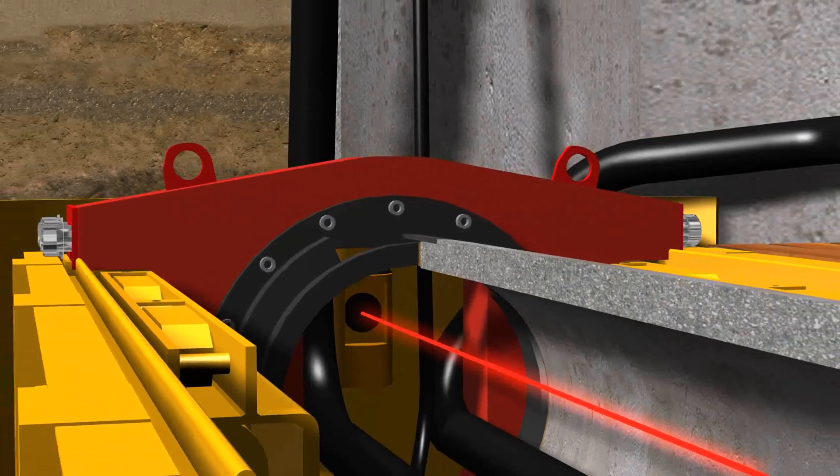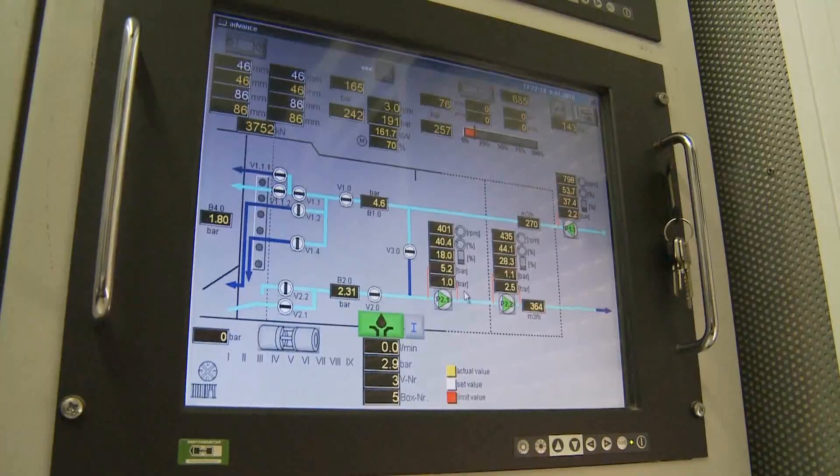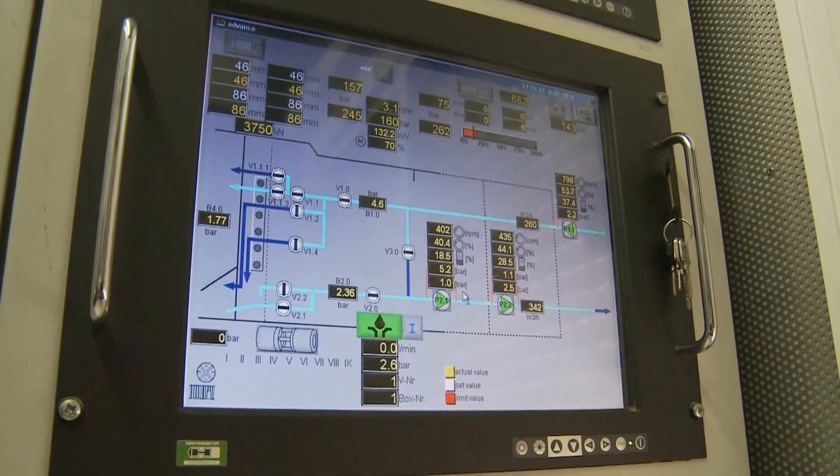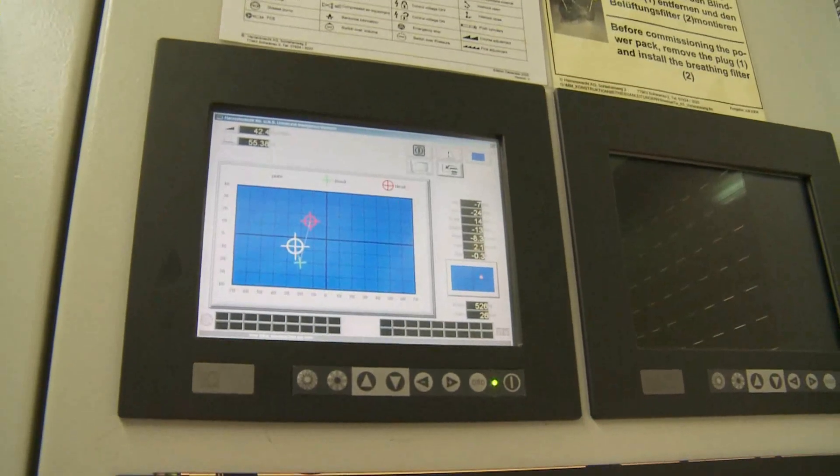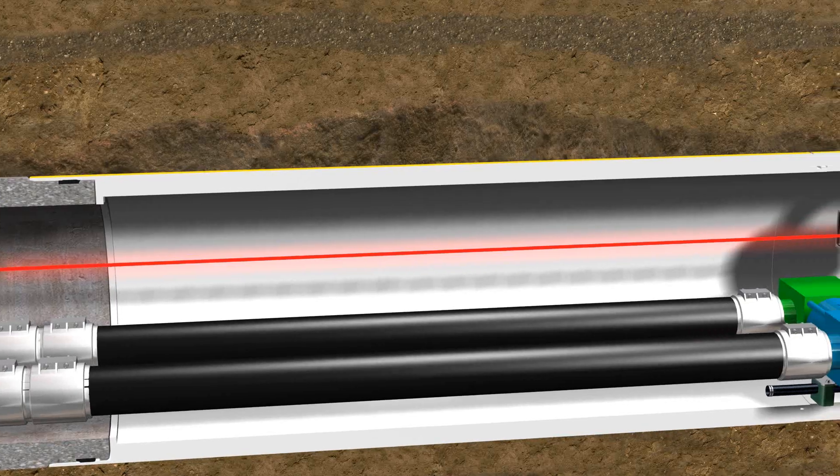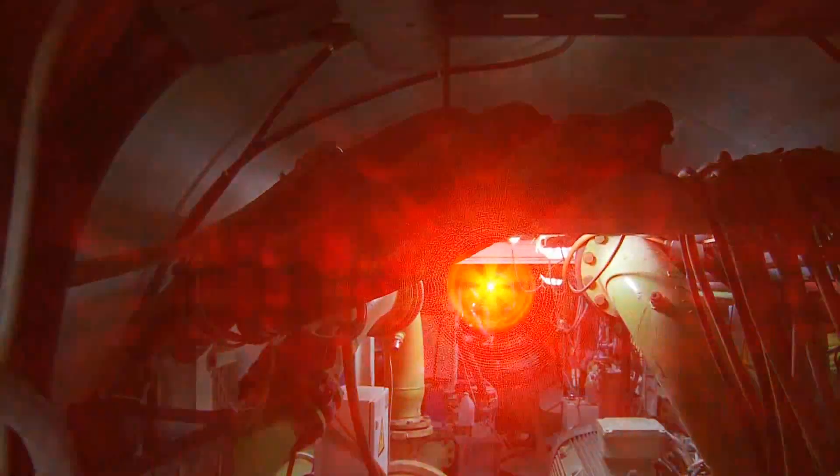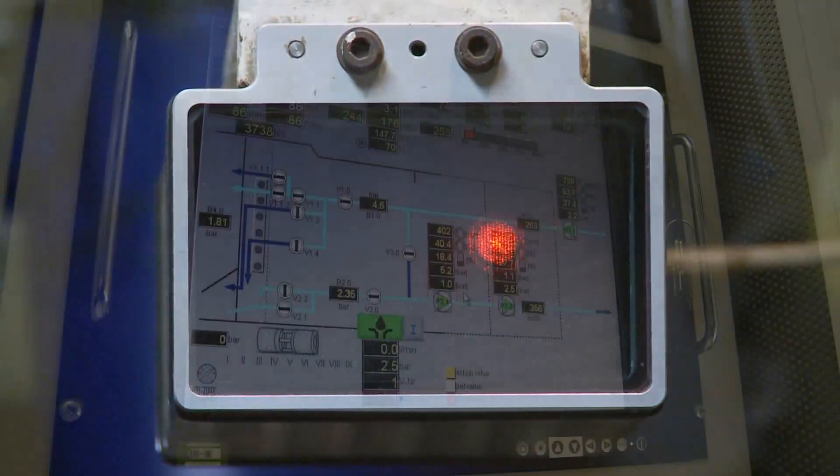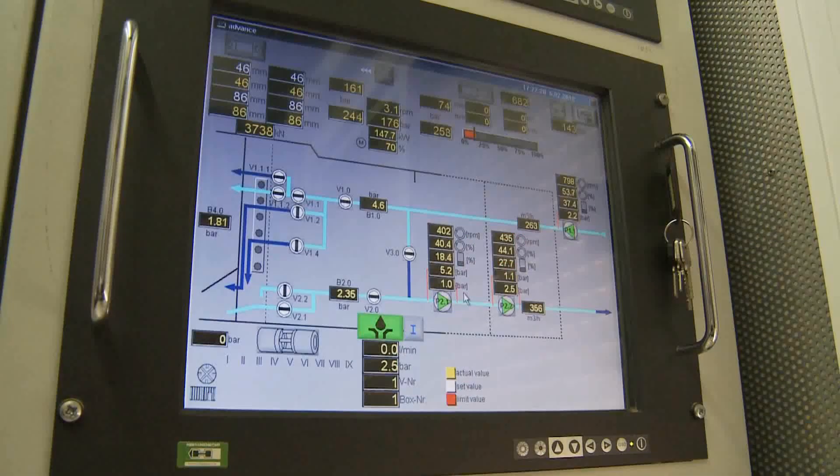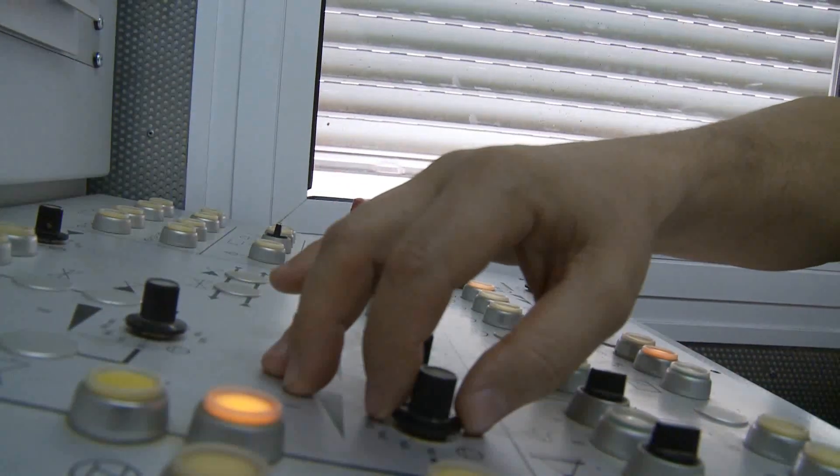The drive is continuously monitored by a laser measuring system. This laser system is positioned in the starting shaft, meeting the target which is installed in the cutter head. The laser determines the reference axis. The laser target identifies any deviation which may occur. The coordinates are transferred to the steering computer in the container and visualized on the screen. Any deviations in position can be corrected by adjusting the steering cylinders at the push of a button on the control panel.